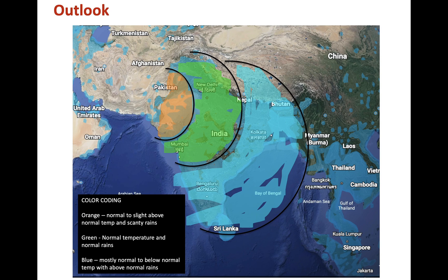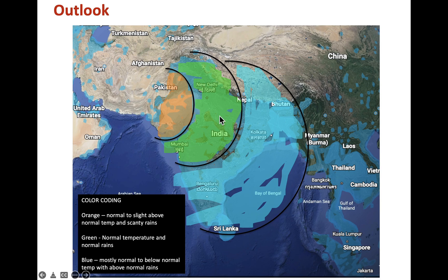So what is the outlook? Given that synoptic scale features are going to be favourable, for the month of May the outlook is as follows. We have created three colour codings: orange, green, and blue. Orange indicates normal to slightly above normal temperatures, especially in far northwest India — specifically western Rajasthan and northern Gujarat — with scanty rains, as those regions are dry desert-type regions. Green means normal temperatures are going to prevail after the record-breaking temperatures. We can expect normal temperatures especially in New Delhi, Mumbai, and parts of central India including Pune, along with normal rains.